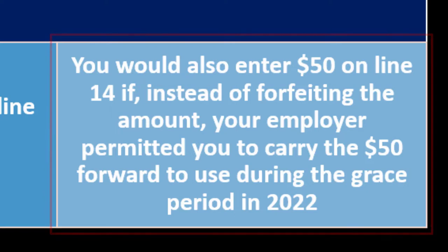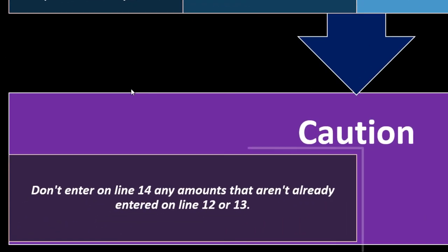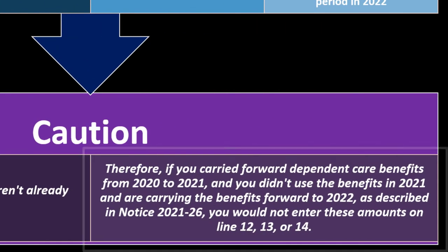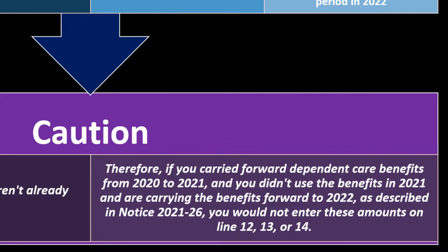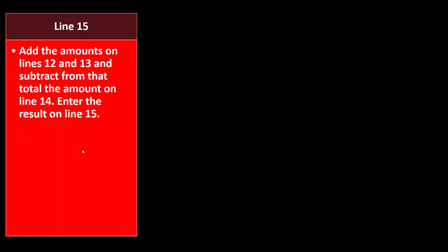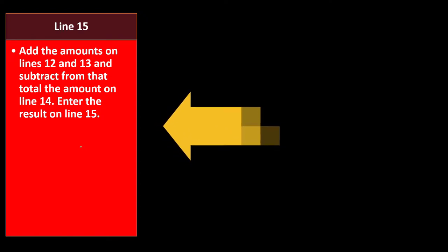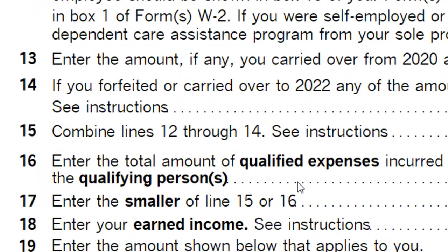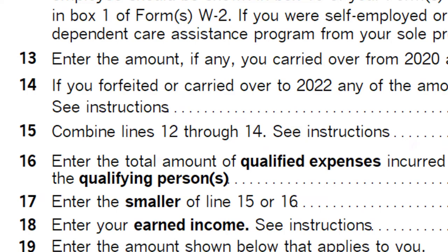If instead of forfeiting the amount, your employer permitted you to carry the $50 forward to use during the grace period in 2022, you would also enter $50 on line 14. Caution: Don't enter on line 14 any amounts that aren't already entered on line 12 or 13. If you carried forward dependent care benefits from 2020 to 2021 and didn't use them and are carrying them forward to 2022 per Notice 2021-26, do not enter those amounts on lines 12, 13, or 14. Line 15: Add lines 12 and 13, subtract line 14, and enter the result.